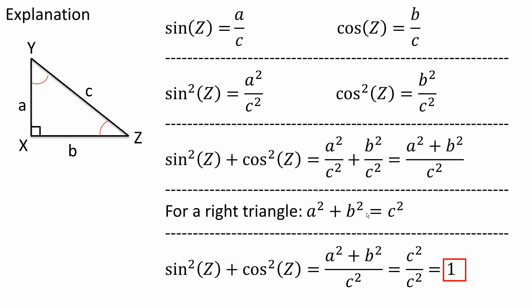Now all I need to do is substitute. Since A squared plus B squared equals C squared, I swap the numerator with C squared, giving C squared divided by C squared, which is 1. And so we just showed that sine squared Z plus cosine squared Z is equal to 1.